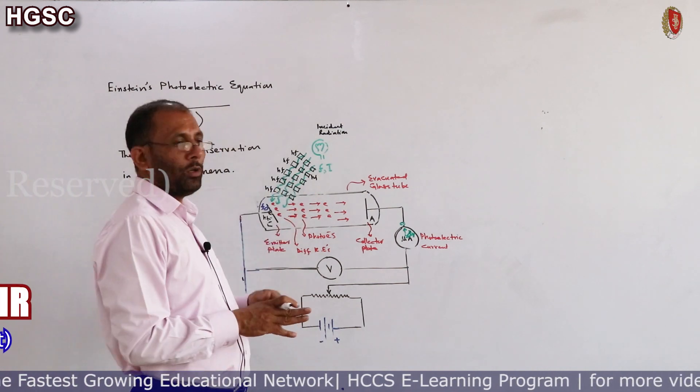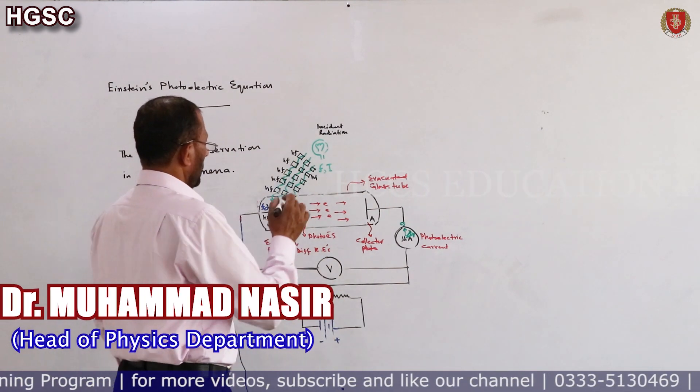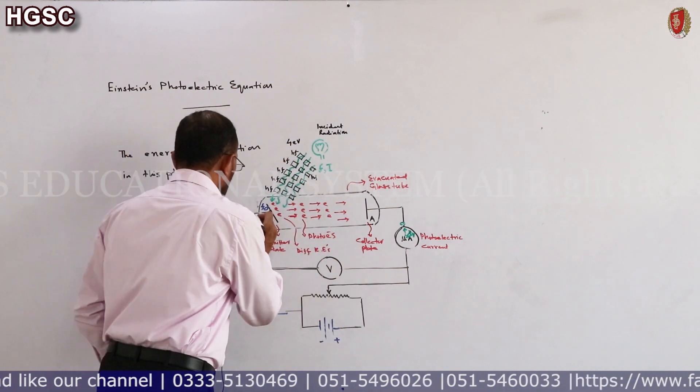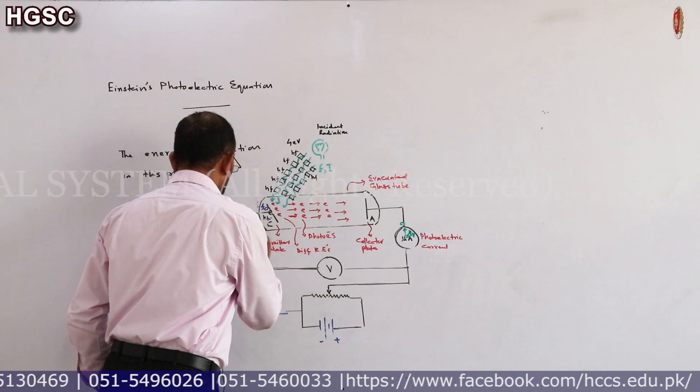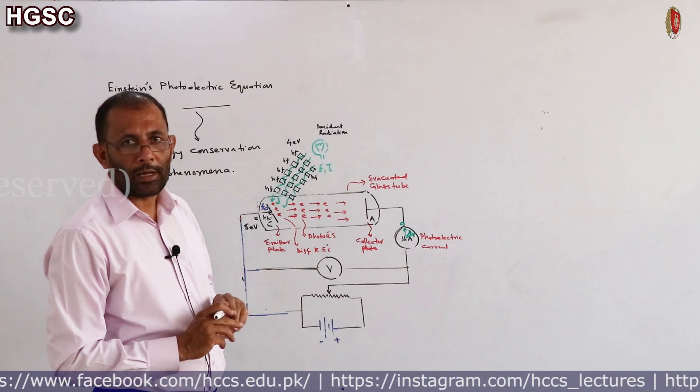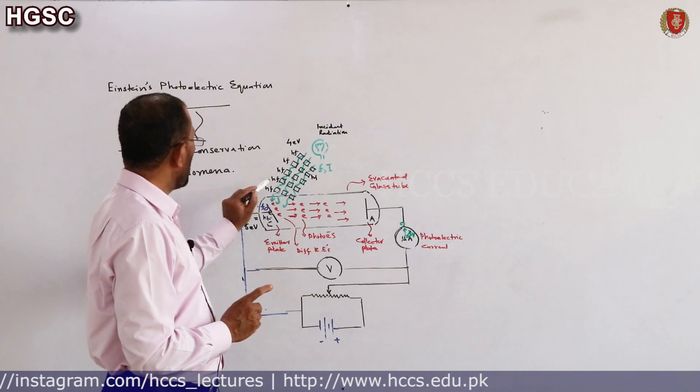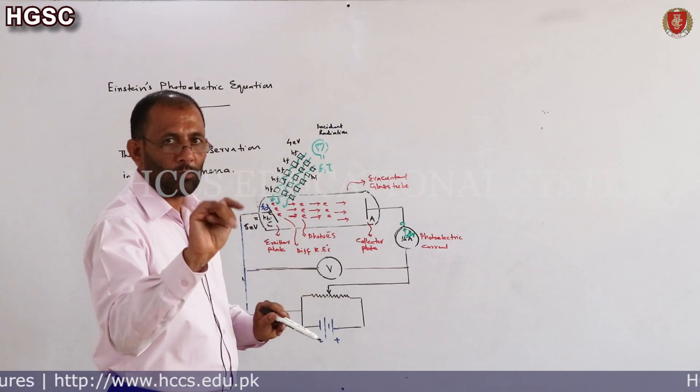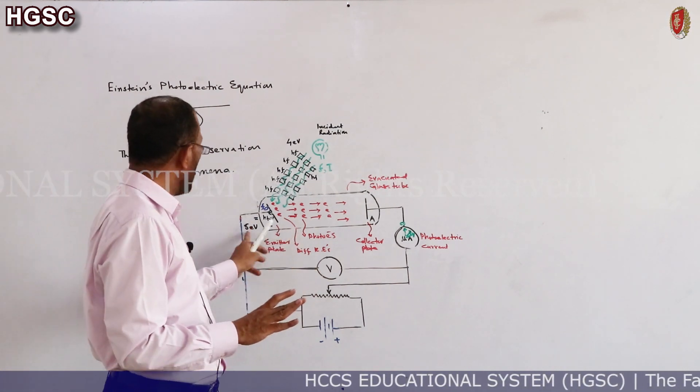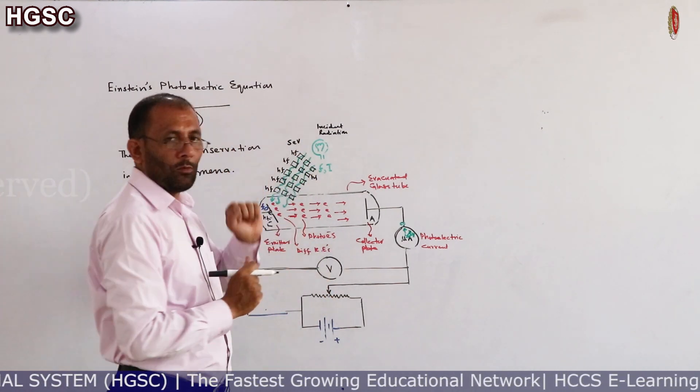This electron's energy will be this which comes out of the metal. Suppose each photon's energy is 4 electron volts and this metal's work function is 5 electron volts. Now if this light falls on metal, then not even a single photoelectron can be emitted, no matter how much the number of photons increases, because the energy that the photon has to transfer to the electron is 4 electron volts, but the minimum required for the electron to come out of the metal is 5 electron volts. So photoelectric emission will not take place.